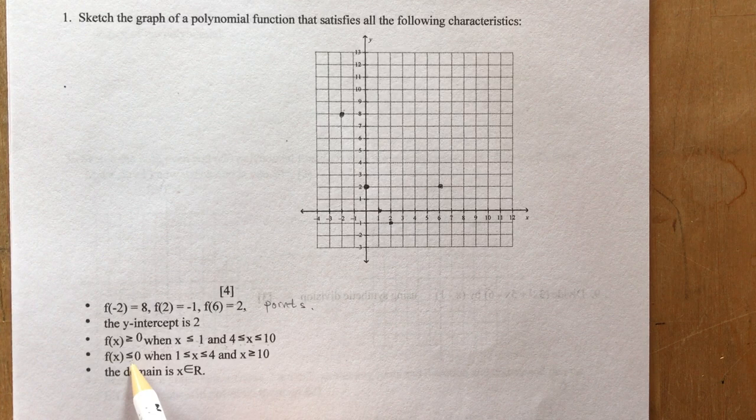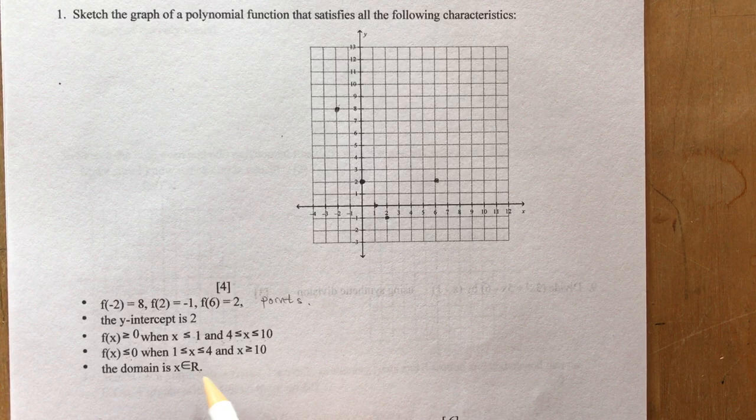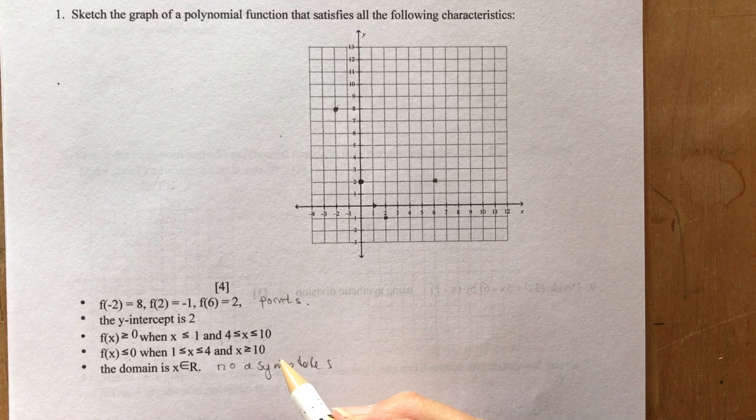That means f(x) is less than 0 — the y values are under the x-axis between those intervals. The domain is x is an element of real numbers, so we know right away that there are no asymptotes. These areas are just telling us where we're above or below the x-axis.